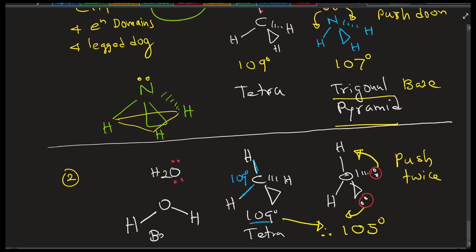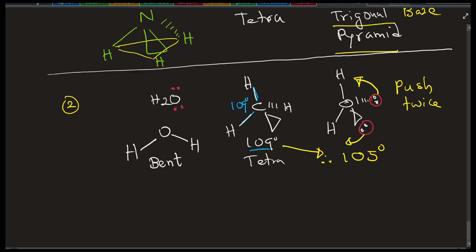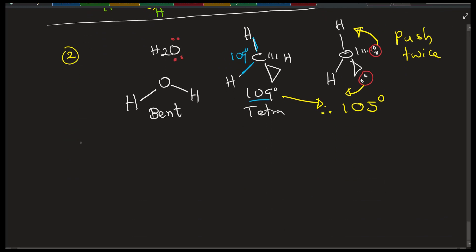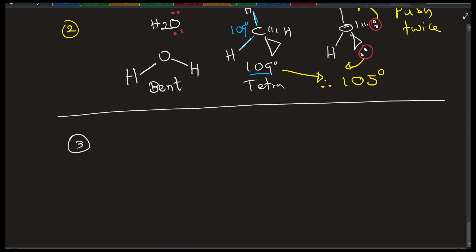This is how we remember. So the water, your final shape is bent because we don't count the lone pair as a shape. So you count only the atoms. H to the O to the H is a bent. So those two are the most important ones.